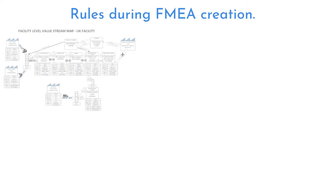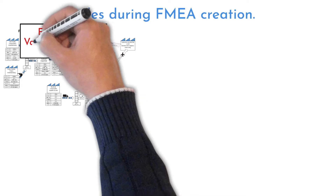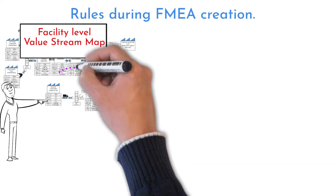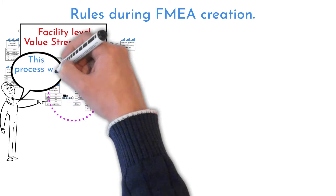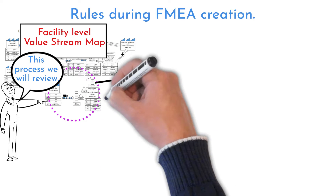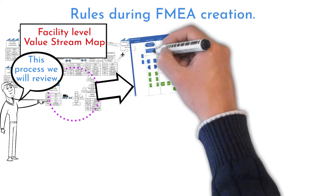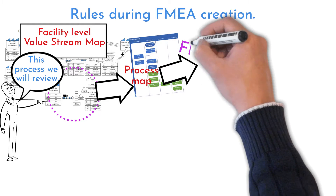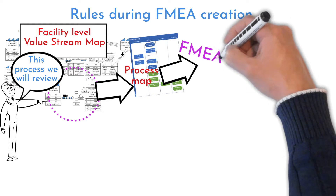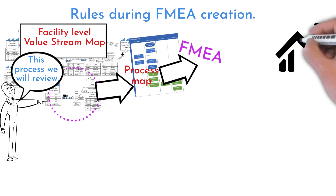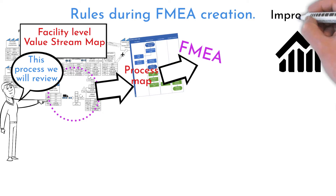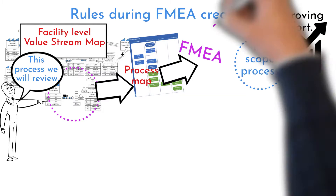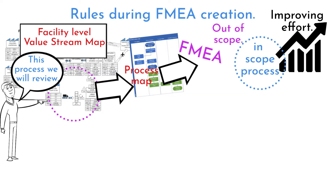Here are some rules to follow when creating FMEA. Identify the process or product you would like to review. Try to address the entire process under your control — divide it if it is too wide. You can use a Value Stream Map or Process Map for process identification. If you are running an improvement project, address processes within the project scope. Process mapping can help you with identification.